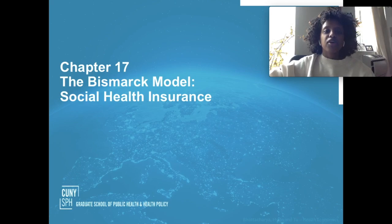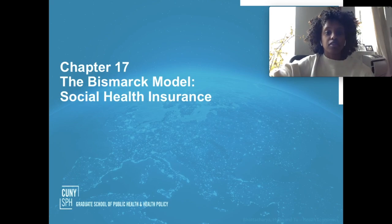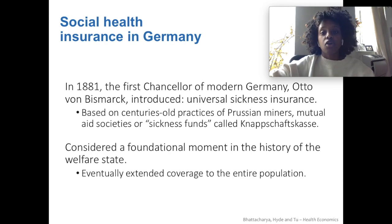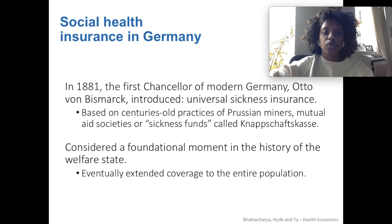The Bismarck model is another kind of single payer that some countries have — it's like a social health insurance scheme. For example, in Germany, the first chancellor of modern Germany, Otto von Bismarck, introduced the universal sickness insurance, which was based on old practices of Prussian miners who would form mutual aid societies or sickness funds.